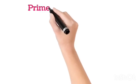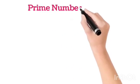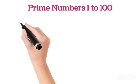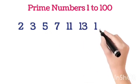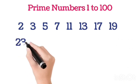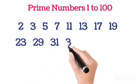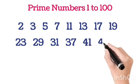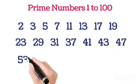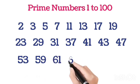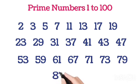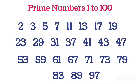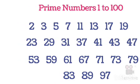Now, we will learn prime numbers between 1 to 100. 2, 3, 5, 7, 11, 13, 17, 19, 23, 29, 31, 37, 41, 43, 47, 53, 59, 61, 67, 71, 73, 79, 83, 89, and 97.